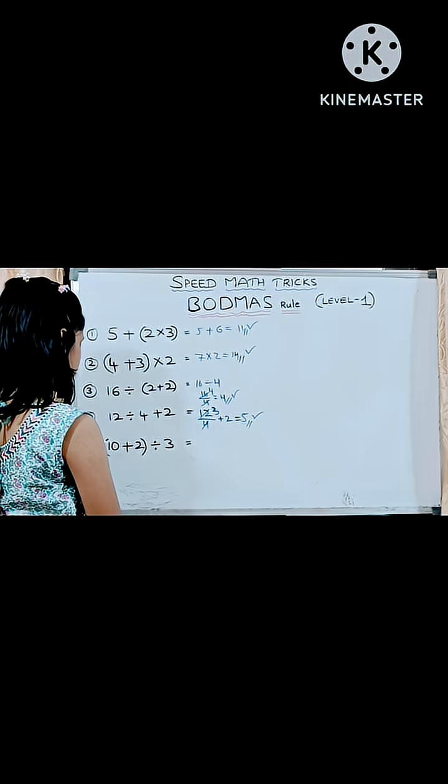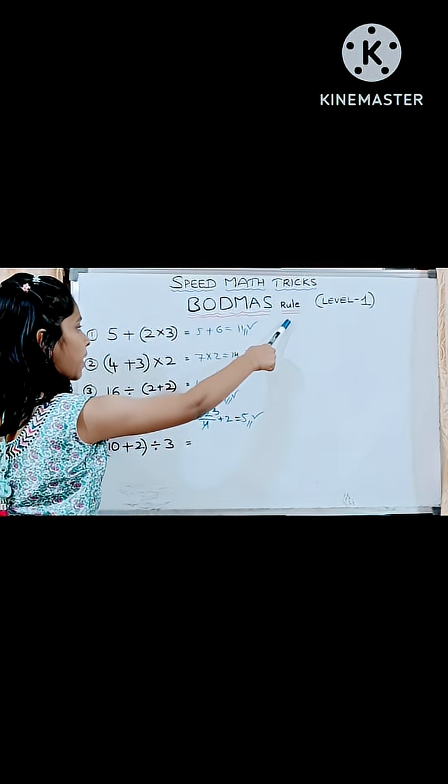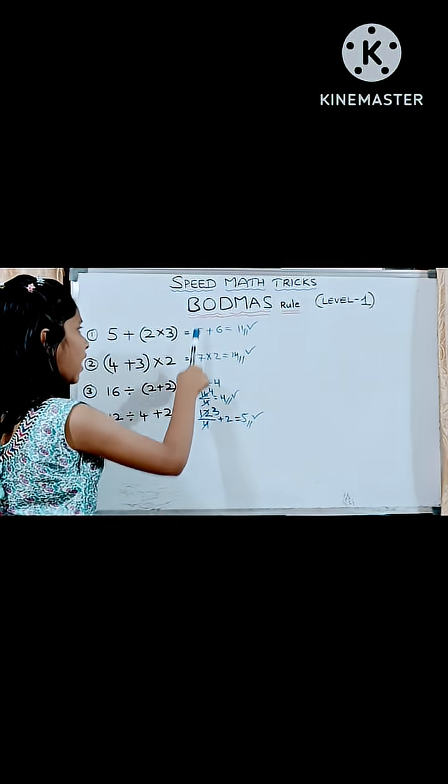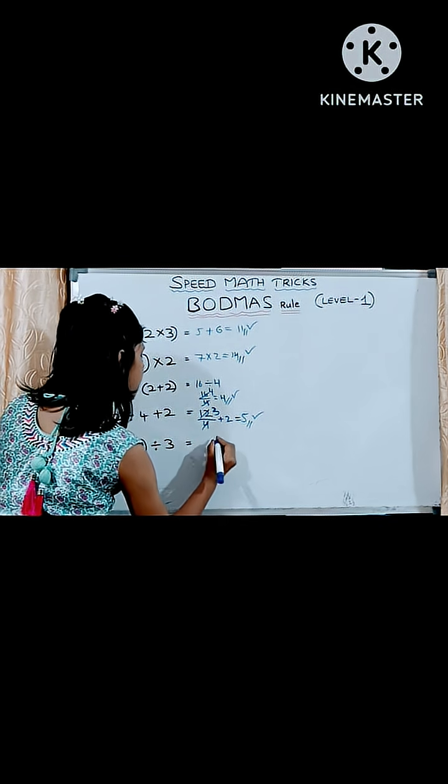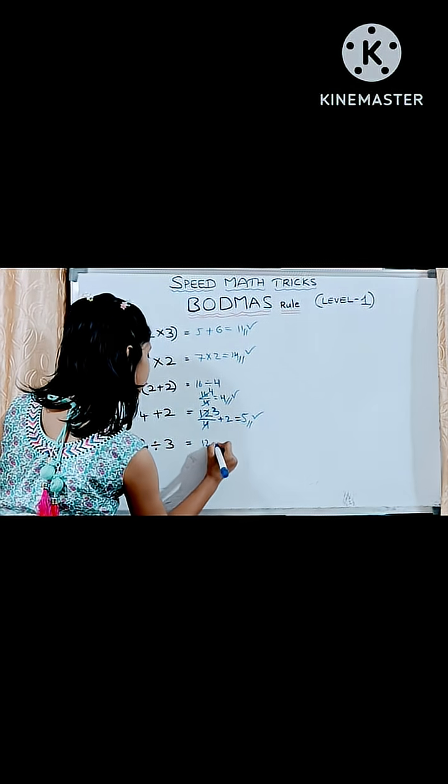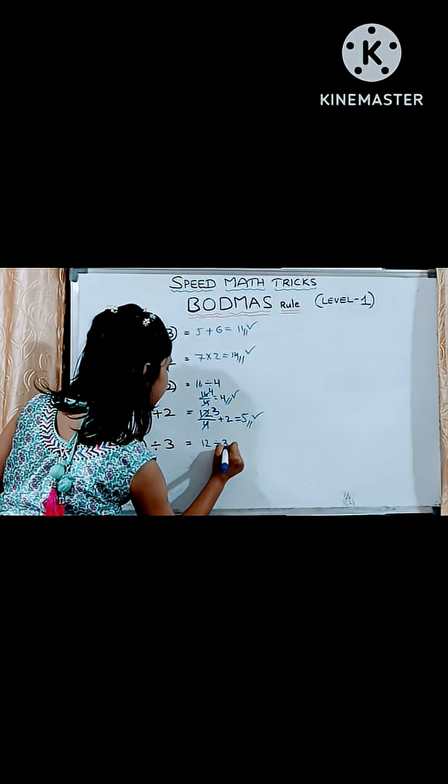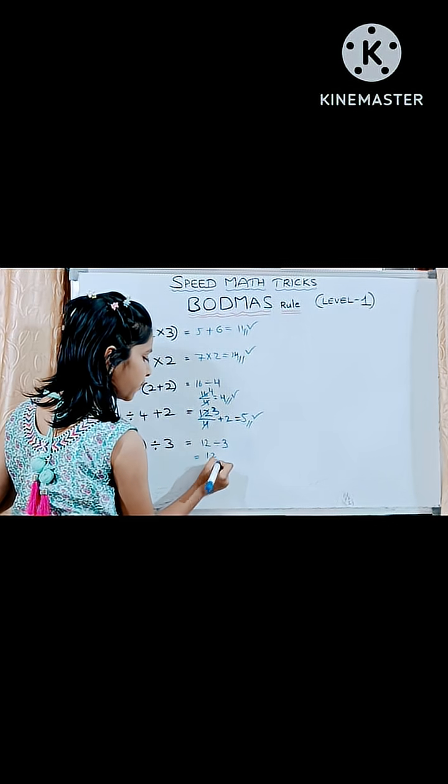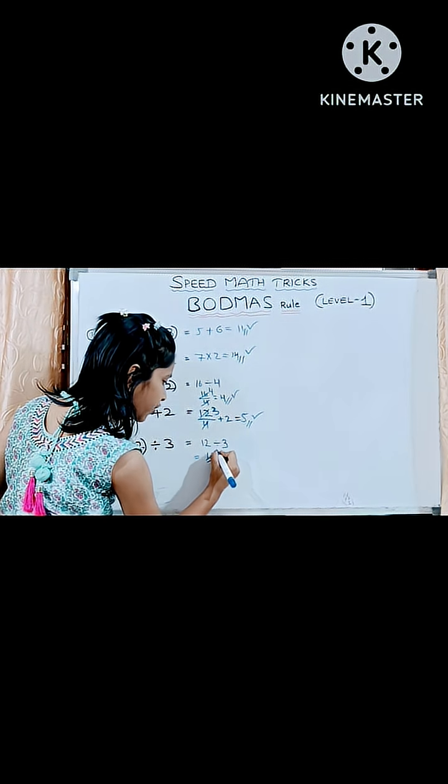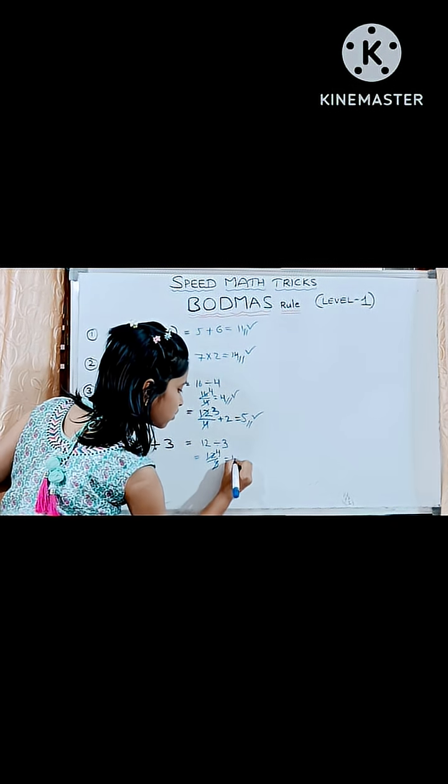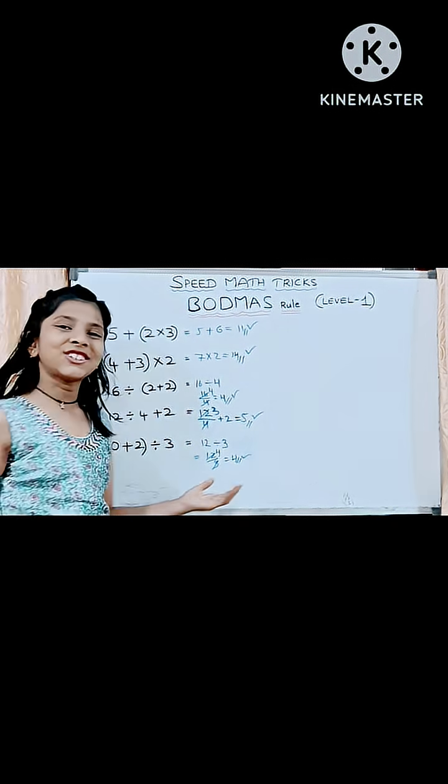In this last question, according to BODMAS rule, first we should simplify bracket, that division. 10 plus 2 is 12 divided by 3 is equal to 4. 12 divided by 3, 4 times is equal to 4. That's all.